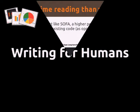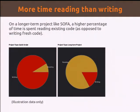Another obvious point that becomes more important: we're writing for humans. On a longer-term project, a higher percentage of time is spent reading existing code rather than writing fresh code. When you're hacking out a quick script, you're thinking onto the page, make a few corrections, and run it. But in a longer-term project, you spend more and more time carefully reading what you've done before so that when you make your changes, you don't have unintended consequences.